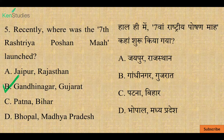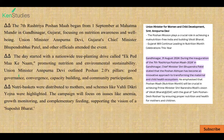The 7th Rashtriya Poshan Maah began from 1st September at Mahatma Mandir in Gandhinagar, Gujarat, focusing on nutrition awareness and well-being. Union Minister Annapurna Devi, Gujarat's Chief Minister Bhupendra Bhai Patel, and other officials attended the event. The day started with a nationwide tree planting drive called 'Ek Ped Maa Ke Naam', promoting nutrition and environmental sustainability.